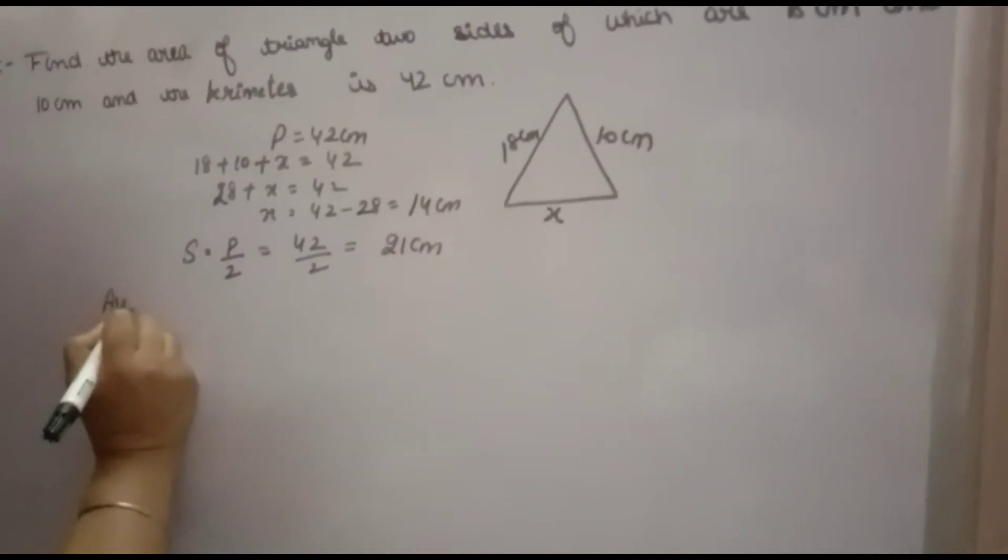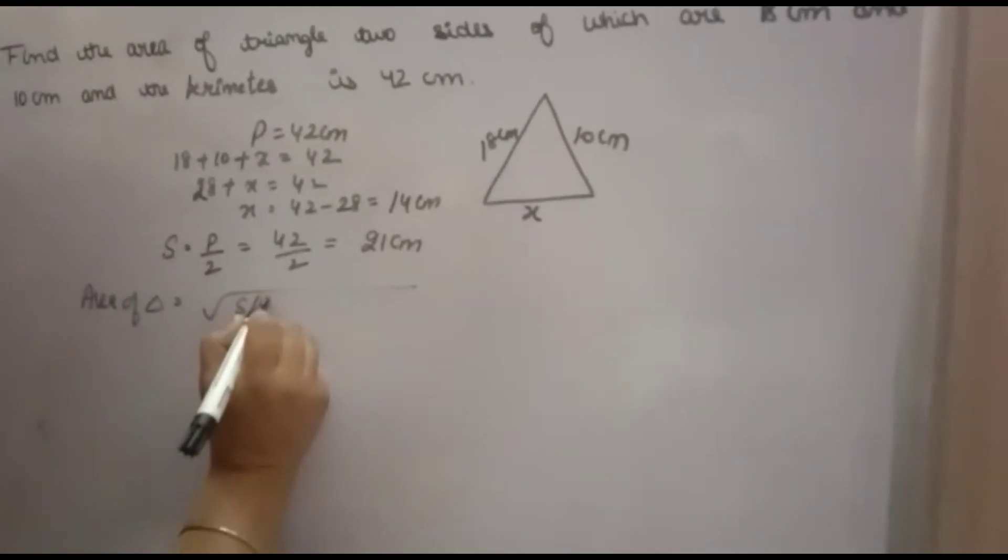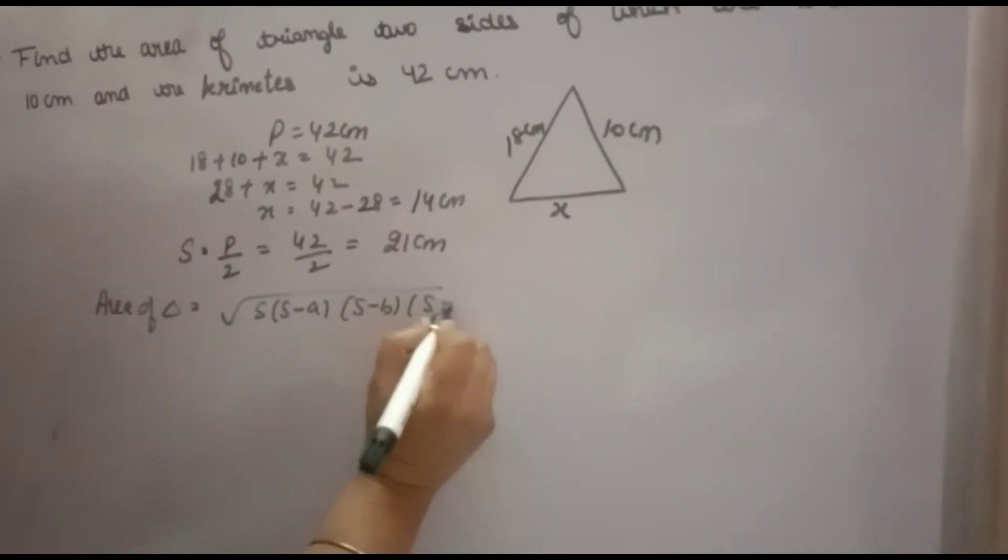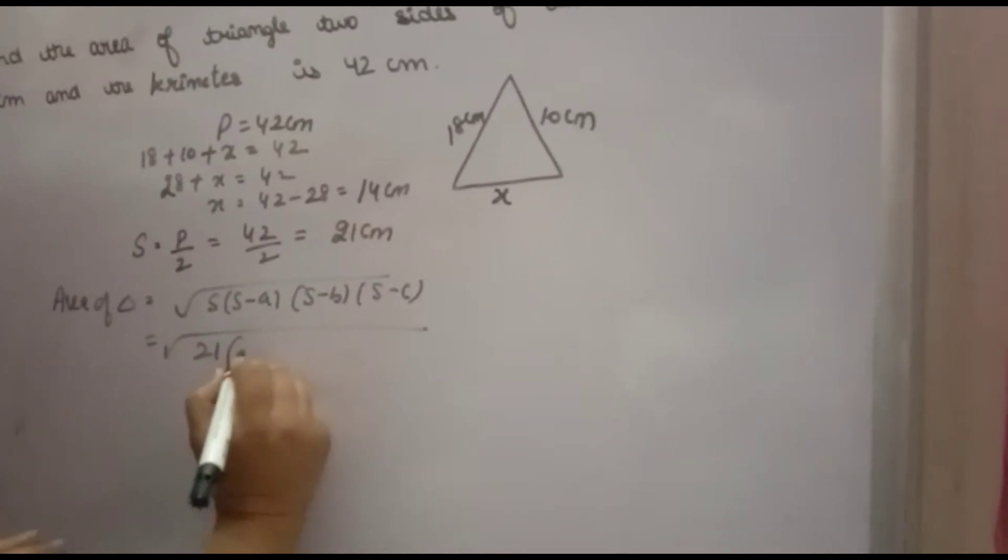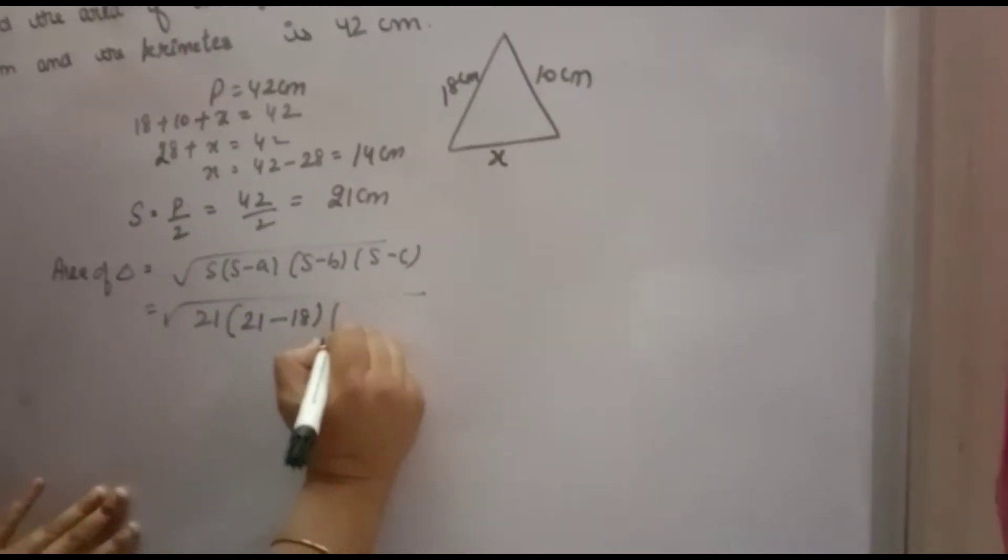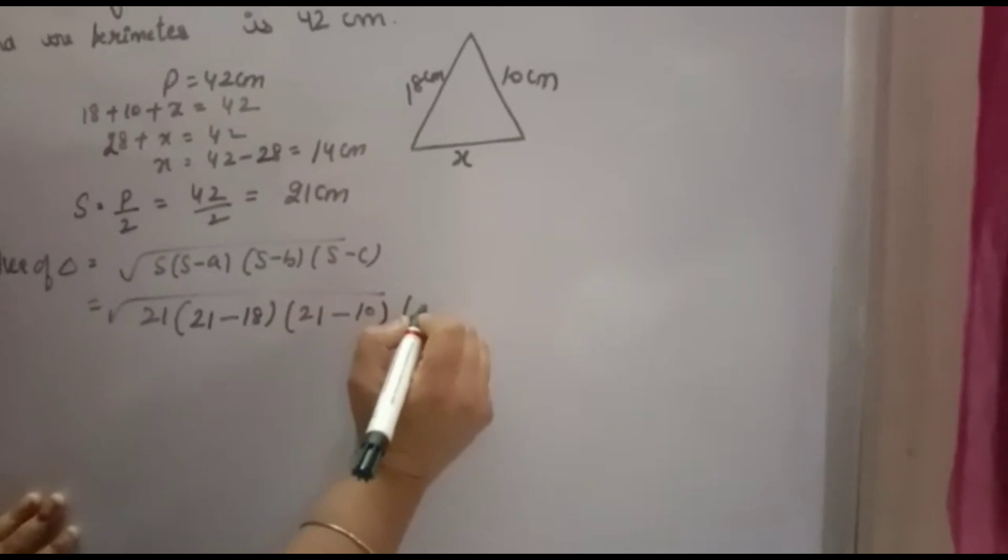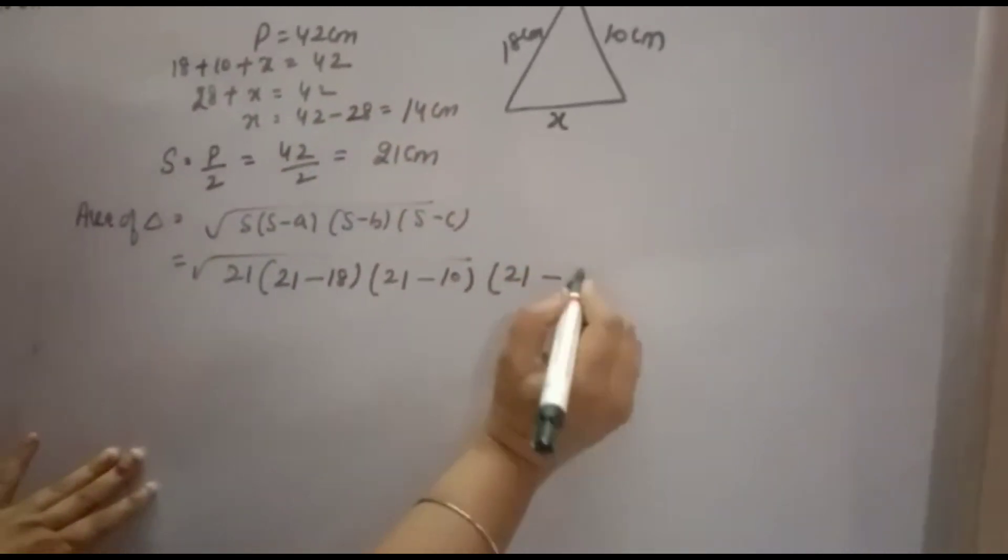Now we'll use Heron's formula. The area of the triangle equals √[S(S-a)(S-b)(S-c)], where S is the semi-perimeter. So that's √[21(21-18)(21-10)(21-14)] = √[21 × 3 × 11 × 7].